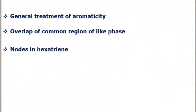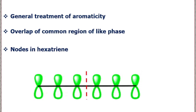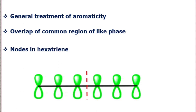Let us take the example of hexatriene, a simple organic molecule. Six partially filled p orbitals are arranged in hexatriene. Nodes are placed in the center and arranged symmetrically with respect to the center of the orbital. Lower energy molecular orbitals have zero nodes between the individual p orbitals. In hexatriene, five nodes are possible.